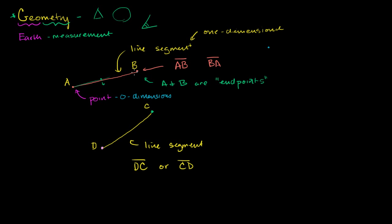Now I just hinted that a line segment can actually have a length. How do you refer to that? You refer to that by not writing the line on top. So if I write AB with a line on top, that means I'm referring to the actual line segment. But if I say AB equals five units — it might be centimeters, meters, or just an abstract unit of five — that means the distance between A and B is five; the length of line segment AB is five.